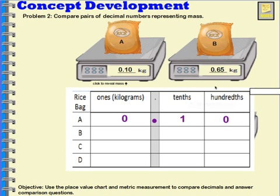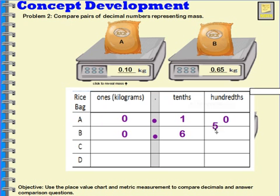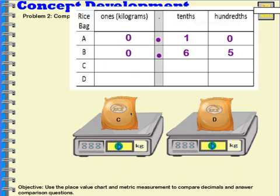Let's take a look at bag B. That one is zero and 65 hundredths. So when I write that on my chart, I have zero whole kilograms, I put in my decimal point, then six-tenths and five-hundredths. I could say I have 65 hundredths, or I could say I have six-tenths and five-hundredths.